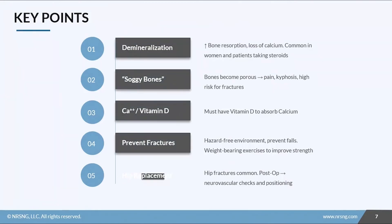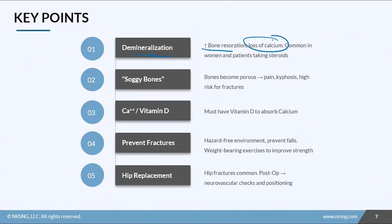To recap: osteoporosis is demineralization of the bone caused by increased resorption of calcium out of the bone, resulting in a net loss of calcium. It's common in women and patients taking steroids. These bones become porous; patients will experience joint pain and kyphosis of the spine, and are at high risk for fractures. Remember they must have vitamin D to absorb calcium. Provide a safe, hazard-free environment, prevent falls, encourage weight-bearing exercises, and if your patient requires hip replacement surgery, do neurovascular checks post-op and position them correctly to avoid dislocation or re-fracture.